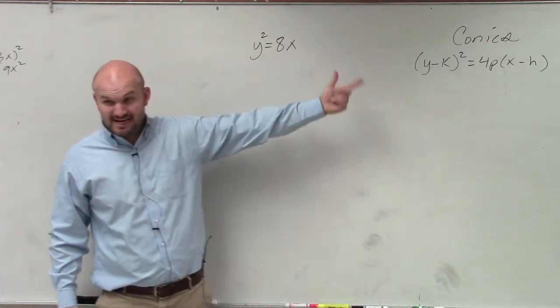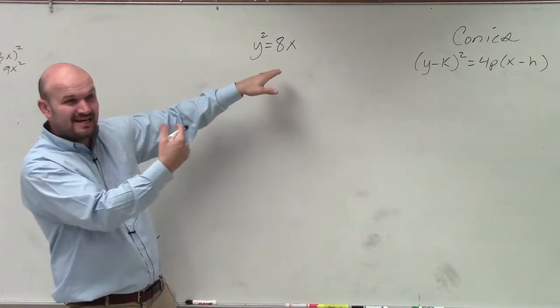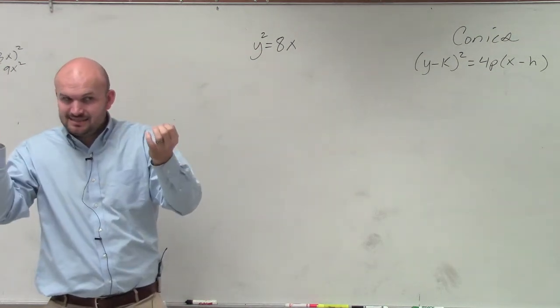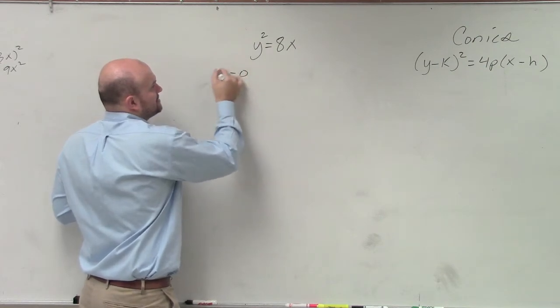What you guys can notice is I don't have an h and a k, so therefore my h and my k in this example, I'm not minusing anything from x and y, so therefore those values are going to be zero. So I can say this would look like this.